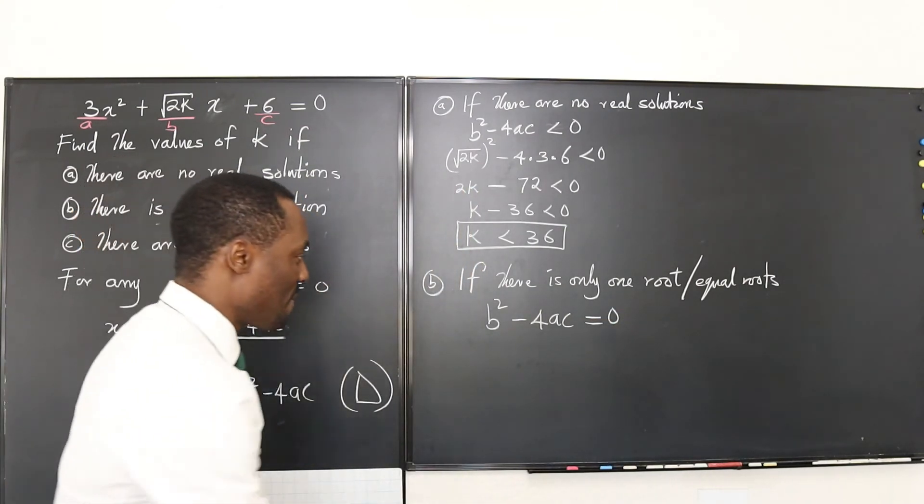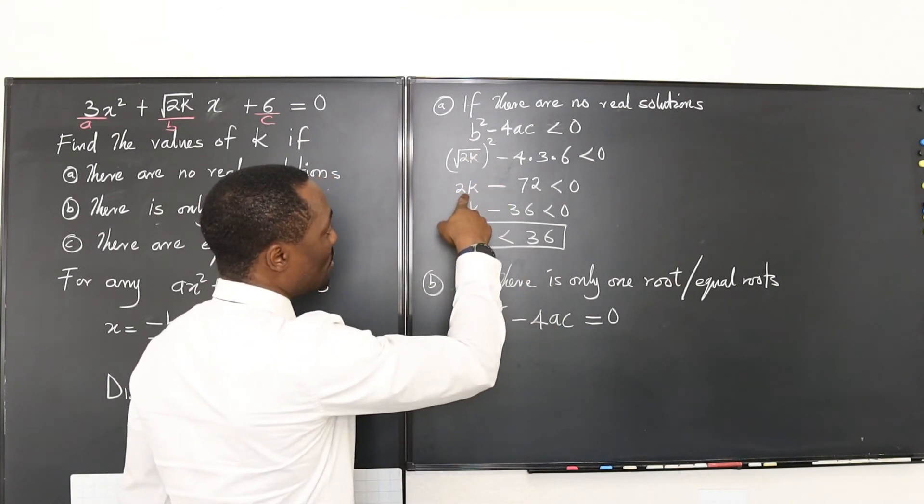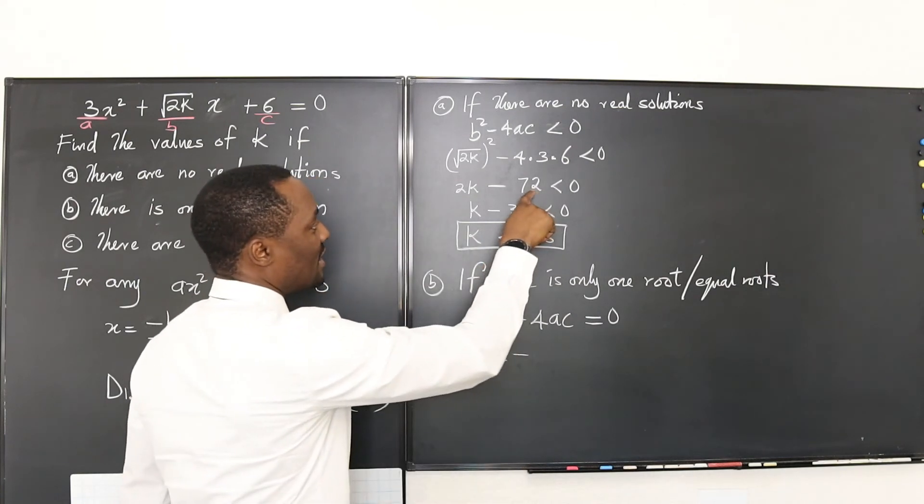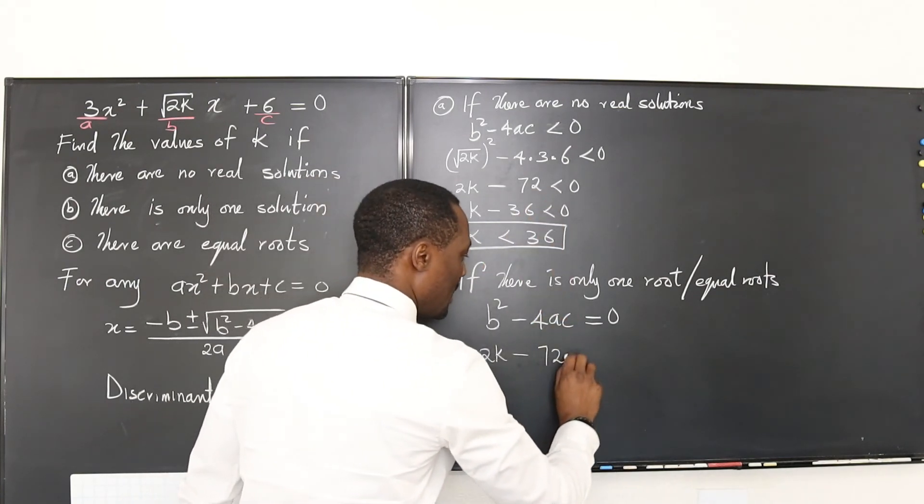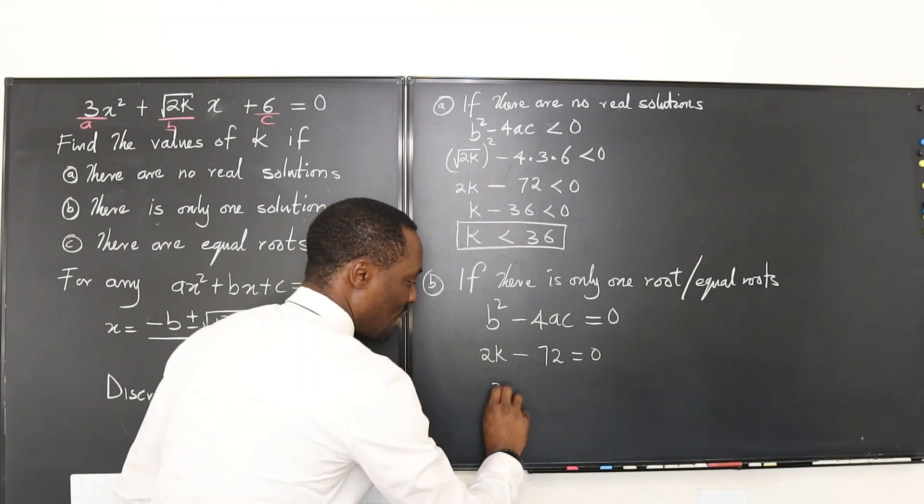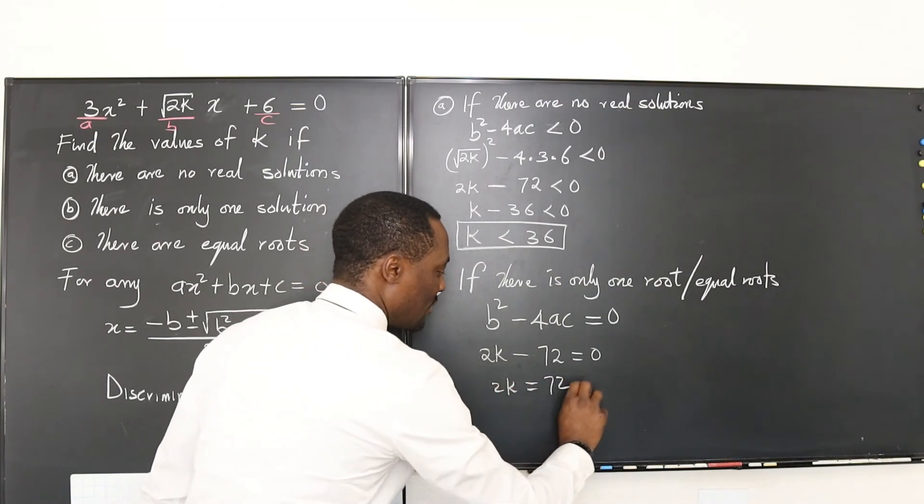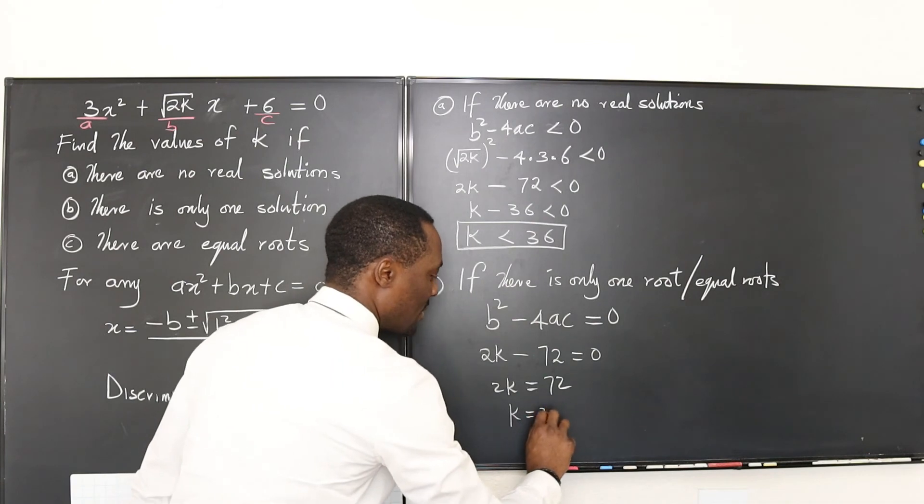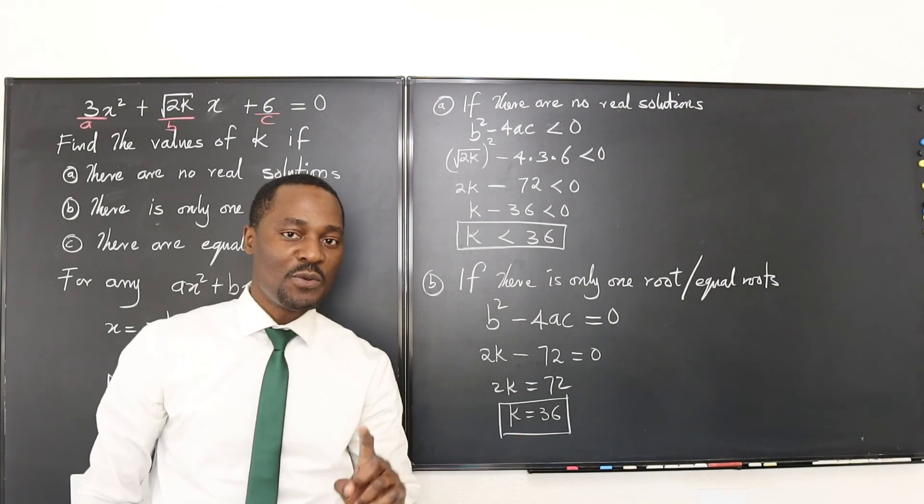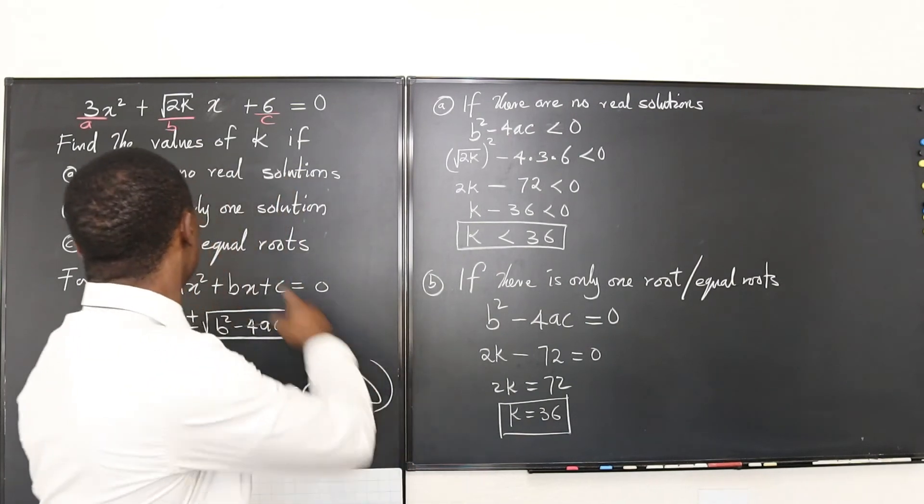Then we can say that b squared minus 4ac is equal to zero. So now what is b squared? Well, we're able to figure b squared out. That's going to be 2k minus what is 4ac? We ended up with 72 equals zero. We can now say that 2k equals 72 and k equals 36. So if k is 36, you're going to get only one root.